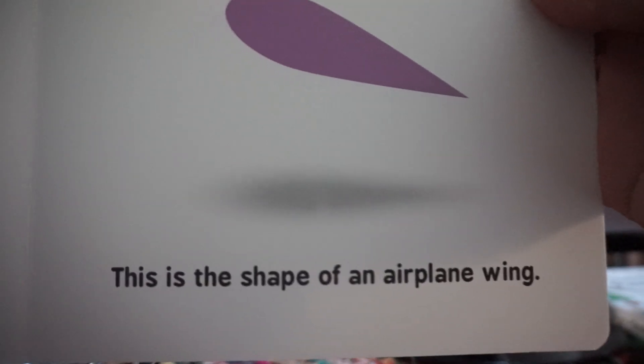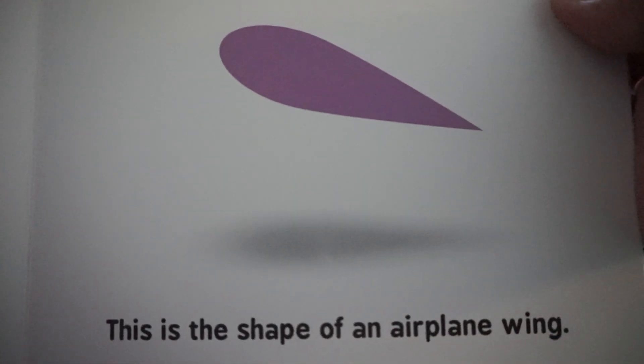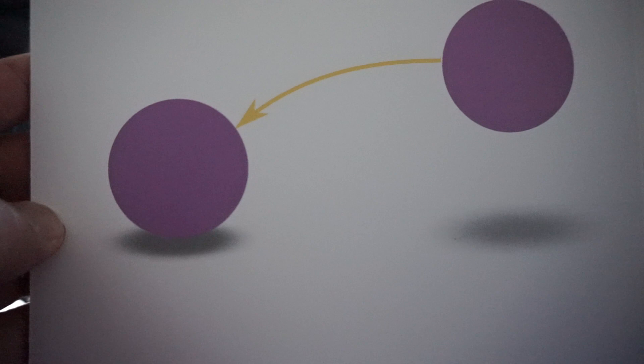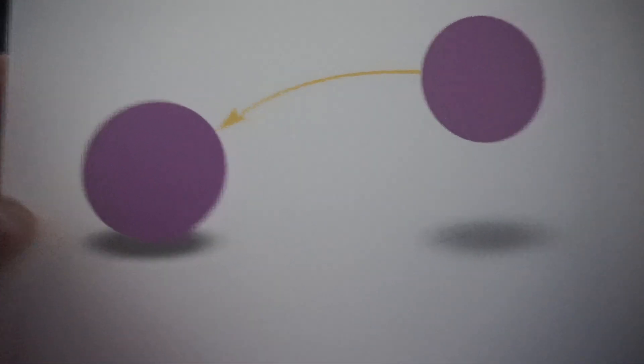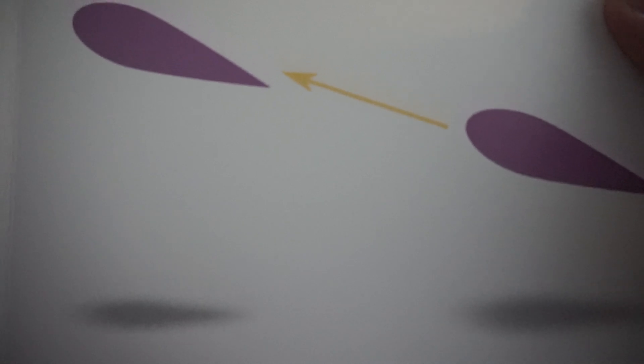This is the shape of an airplane wing. The ball has no lift. The wing has lift.